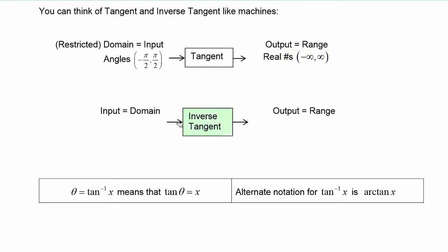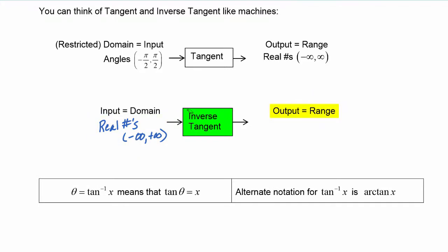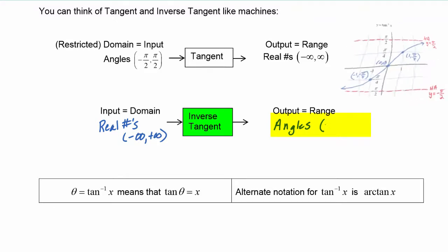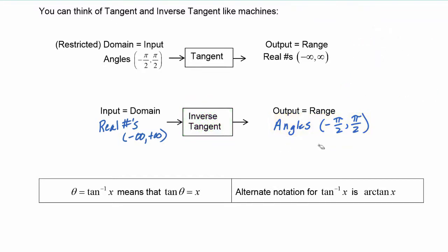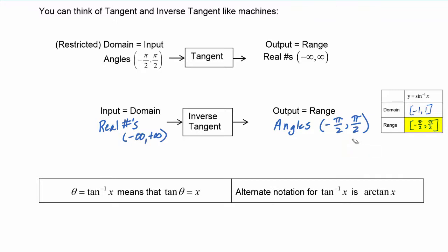Then that means for inverse tangent, when we input its domain we're going to have to input real numbers from negative infinity to positive infinity. Because it's an inverse tangent function, it will output a range that consists of angles between negative pi over two and positive pi over two. This is almost the same range as sine inverse, except sine inverse had hard brackets because it includes those endpoint values of negative pi over two and pi over two.